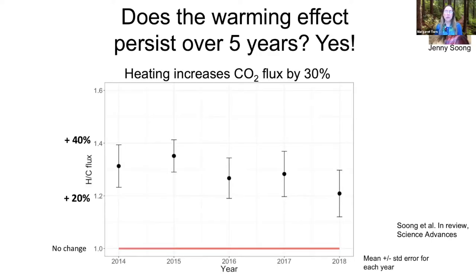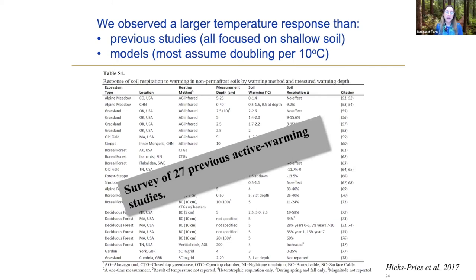We then wanted to know whether this effect persists. Now, having run the experiment for more than five years, the answer is yes — the heating is still increasing CO2 flux by 30%. There might have been a slight downturn in 2018, but it's not statistically significant. We looked at 27 other active warming studies, but they all focused on shallow soil and therefore didn't see as much of a cumulative response. This means that previous models and studies would be underestimating this effect.